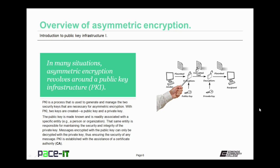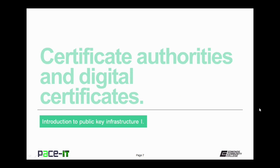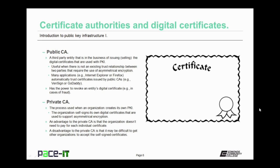PKI is established with the assistance of a certificate authority. Let's move on to certificate authorities and digital certificates. There are different types of certificate authorities. The first one is the public CA — a third-party entity that is in the business of issuing, as in selling, the digital certificates that are used with PKI. A public CA is useful when there is not an existing trust relationship between two parties that require the use of asymmetrical encryption.